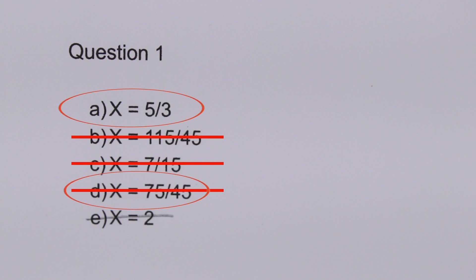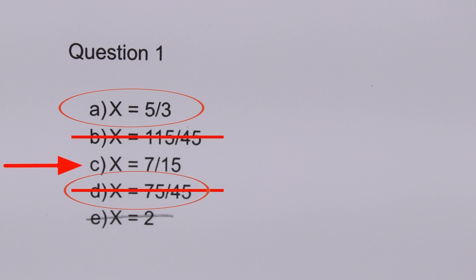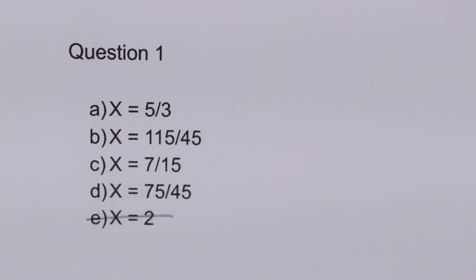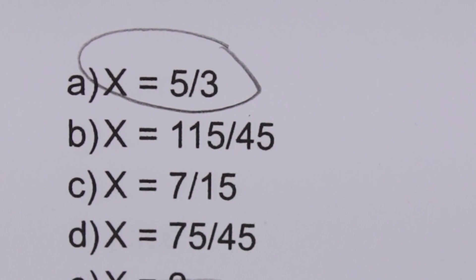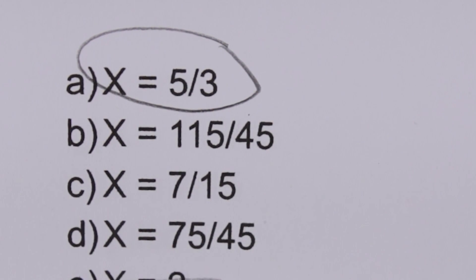The second reason is that all of the other options are top-heavy fractions, meaning the numerator is larger than the denominator. Even 2 is a top-heavy fraction if you think about it. So if 7 over 15 were the correct answer, it doesn't really match the test maker's objective because all the other answers are so different that none of them make good competitors. So we'll choose A — 5 over 3. And yes, that was the right answer.